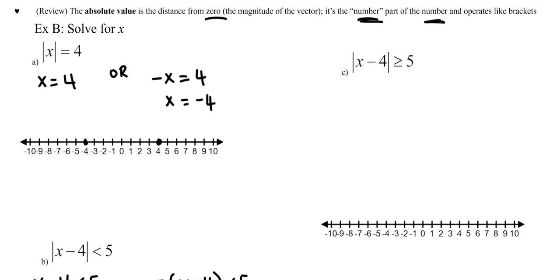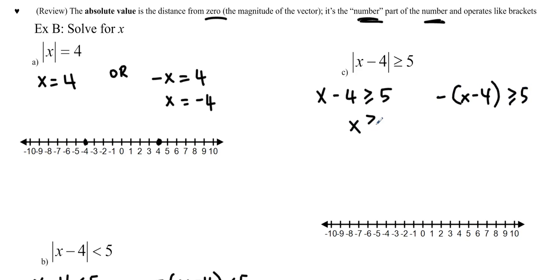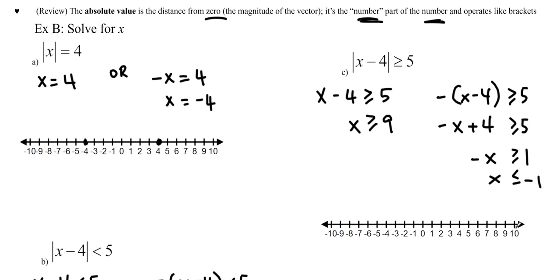For the last inequality example, we treat it the same way — positive and negative versions. We get x greater than or equal to 9 from the positive case. Using the distributive property on the negative case: negative x plus 4 greater than or equal to 5, then moving the 4 and dividing by negative 1 flips the sign, giving x less than or equal to negative 1. We use closed dots at 9 and negative 1, with arrows going outward in both directions — two separate intervals.